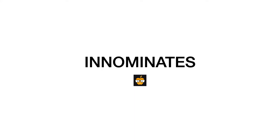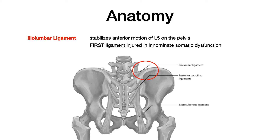Our conversation should begin with a discussion of the local anatomy. The first high-yield anatomical area to think about is the iliolumbar ligament. This ligament stabilizes anterior motion of L5 on the pelvis — kind of like the equivalent of the ACL in the knee, but in the pelvis. The reason this is so high-yield, especially for COMLEX and in-class exams, is because the iliolumbar ligament is usually the first ligament injured in innominate somatic dysfunction.